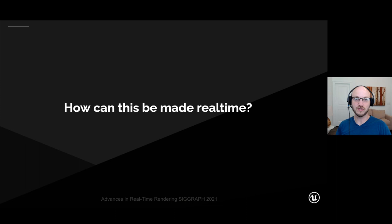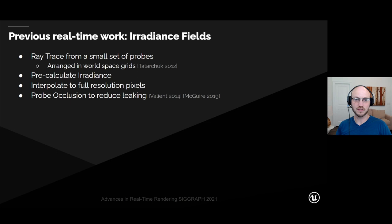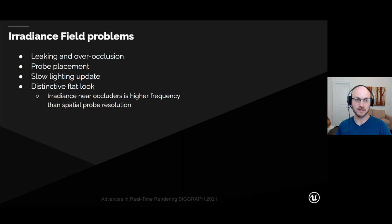Previous approaches mostly fall into two categories. The first one is irradiance fields. Irradiance fields ray trace from a small set of probes arranged in world space grids, pre-calculate irradiance at those probe positions, and then interpolate to the full-resolution pixels. Some implementations add probe occlusion to reduce leaking, but all irradiance field implementations suffer from leaking and over-occlusion. The probe placement is very difficult, most implementations have a slow lagging update to cover artifacts, and the algorithm produces a distinct flat look from calculating irradiance at too low a spatial resolution.